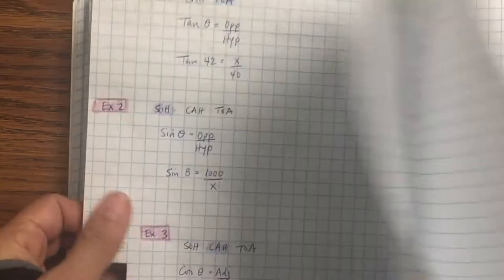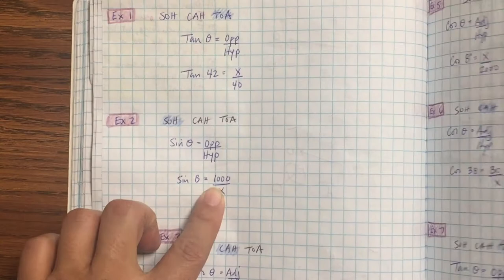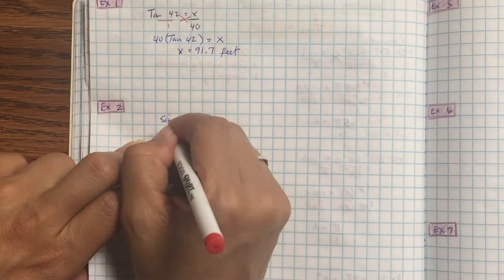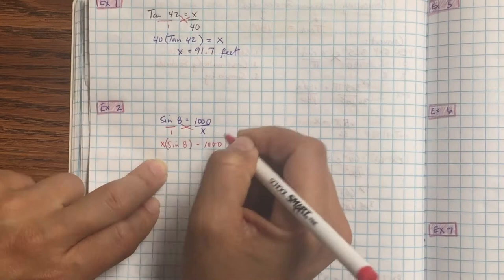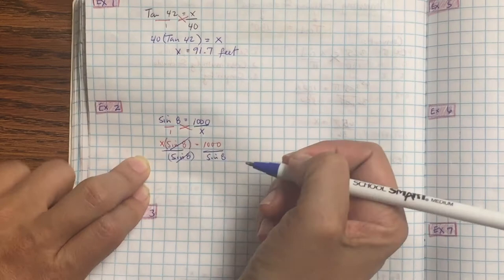Let's take a look at the second one, write it out. So sin 8 equals 1,000 over x. So again, the only two types of questions you're going to have. Either you're finding the inverse or putting a fraction, so it's putting a fraction. Cross multiply and divide. It's going to be x sin 8 equals 1,000. Divide both sides by sin 8 because we're going to try to get x by itself. So we're going to get x equals, and you're going to put that in the calculator.